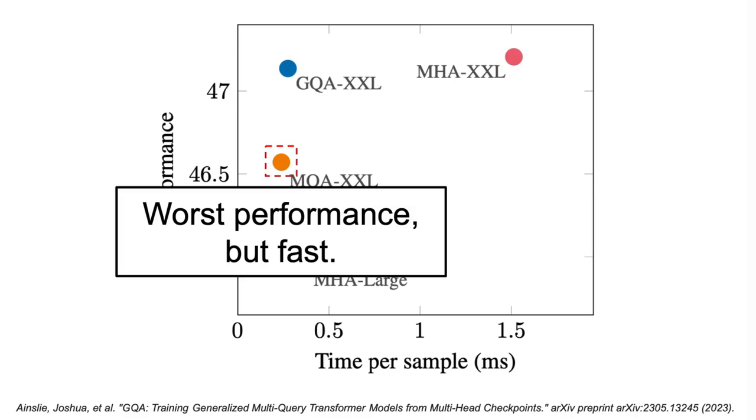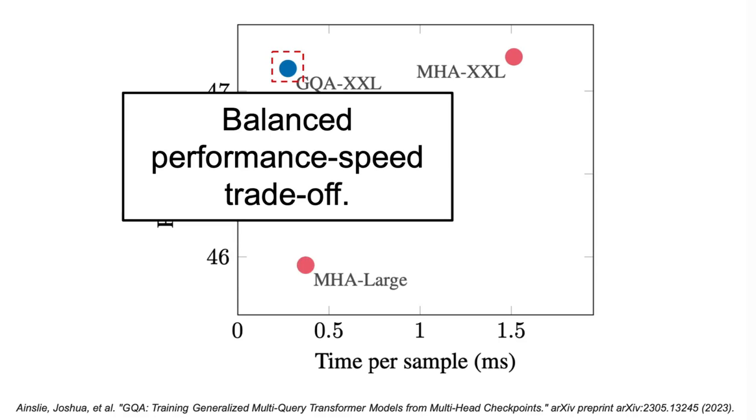The multi-query attention is both the fastest and the worst performing method, and the grouped query attention manages to achieve a similar speedup as the multi-query attention, while the degradation in quality is insignificant.